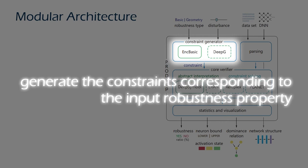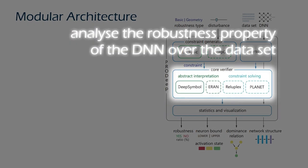The constraint generator produces the constraints corresponding to the input robustness property. The core verifier analyzes the robustness property of the deep neural network over the dataset. Users can choose a suitable verification method according to the network size and the dataset.